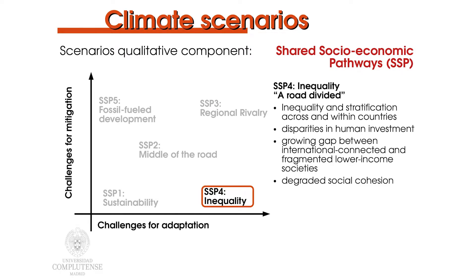SSP 4 is named inequality or a road divided. Its main characteristic is the inequality and stratification both across and within countries. There is a highly unequal investment in human capital and a growing gap between an internationally connected society that contributes to knowledge and economic growth and a fragmented collection of lower-income, poorly educated societies that work in a labour-intensive low-tech economy. Social cohesion degrades and conflict and unrest become increasingly common. Technology development is high only in the high-tech economy. This scenario presents low challenges to mitigation, but a high challenge to adaptation for the population with low levels of development.